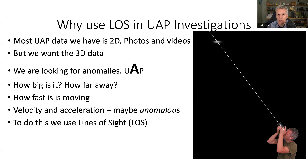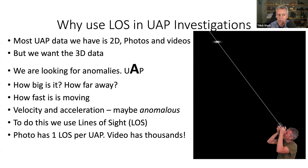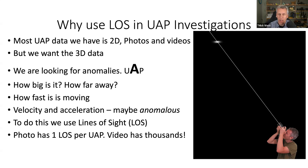Line of sight is what we get from video and from photos. A photo only has one line of sight, but a video has thousands — each frame has its own individual line from the camera to the UAP. This is fairly basic, but I want to make sure everyone understands what we're talking about.